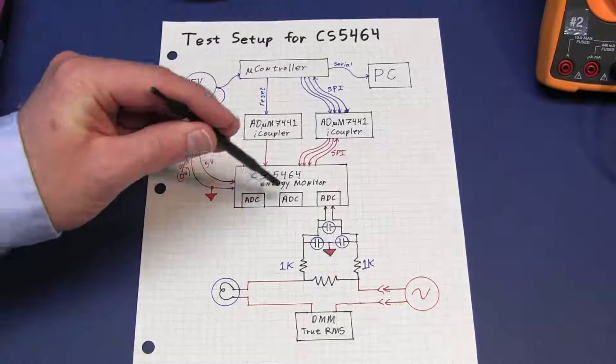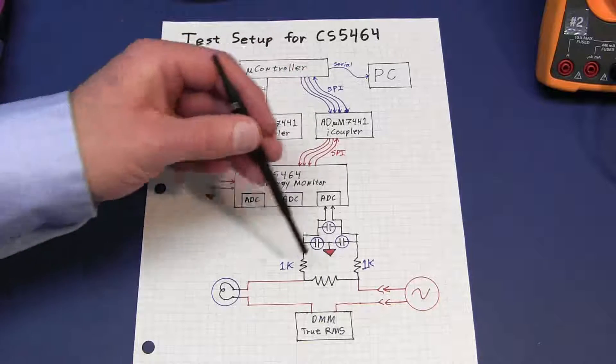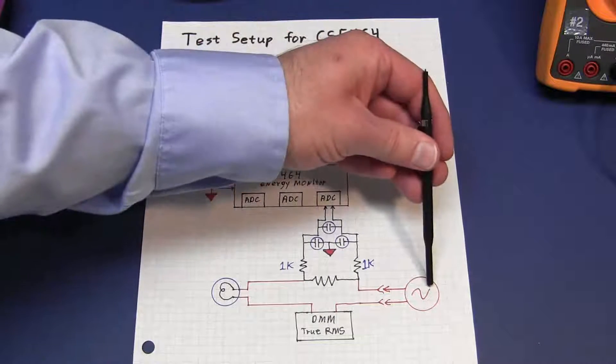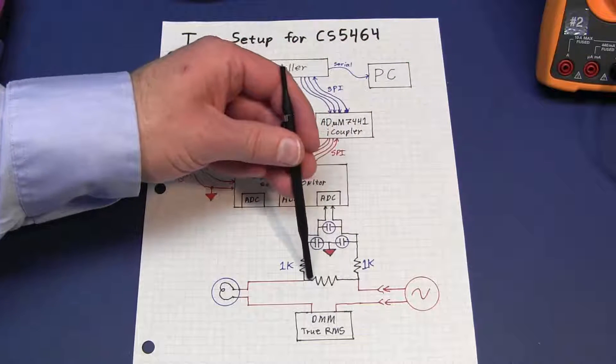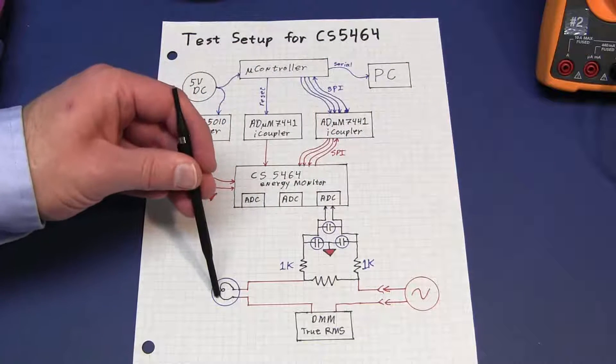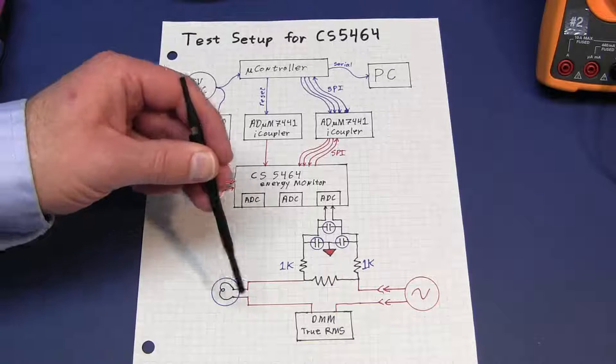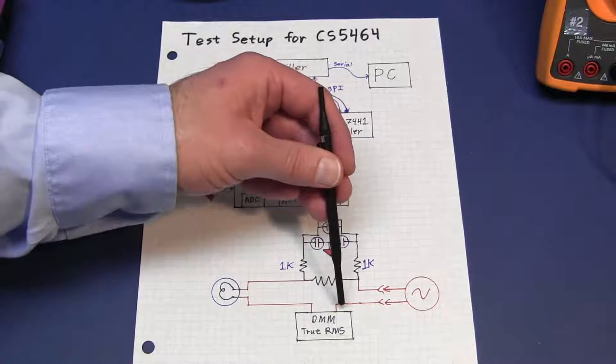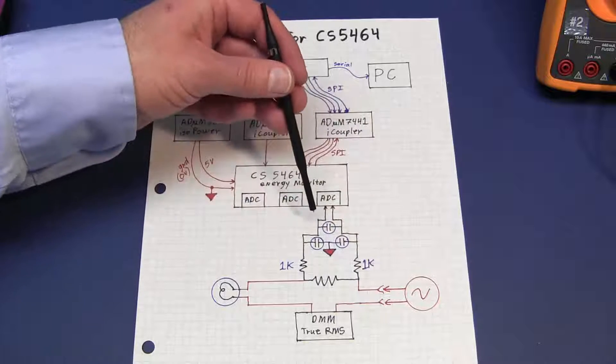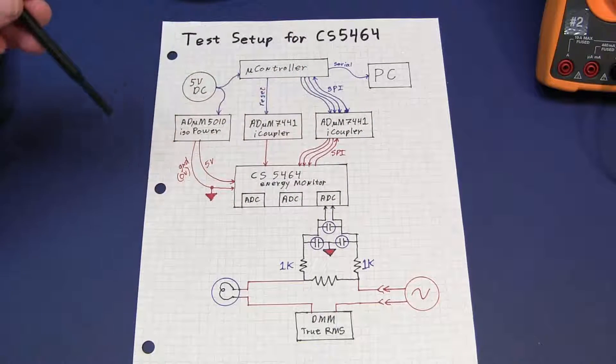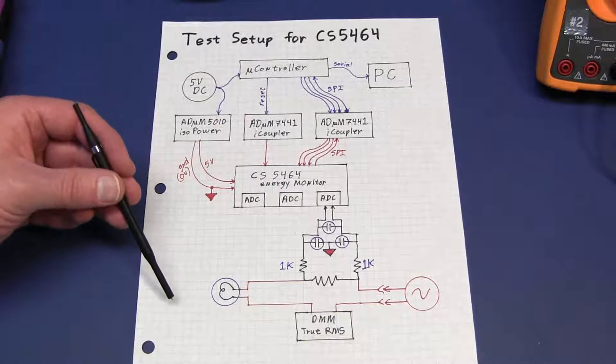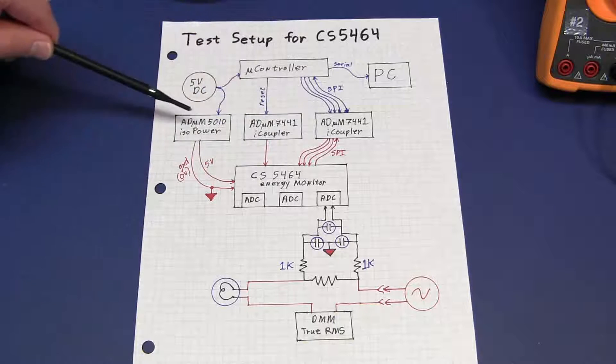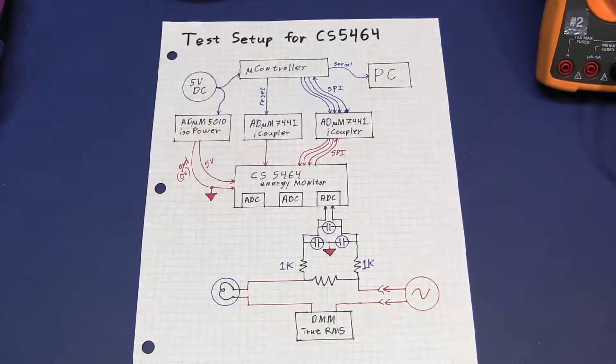From the energy monitor, we have three ADCs and those connect to the shunt. We have AC power coming in through the shunt out to a lamp or series of test lamps through a DMM to measure the true RMS current and see how accurate we are. And that's really about it. It's a pretty straightforward circuit, just a little bit more complicated with all of this galvanic isolation thrown into the middle.